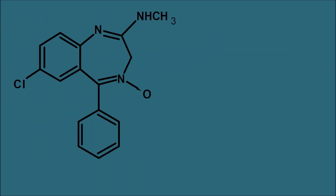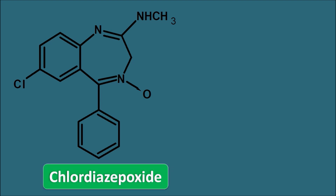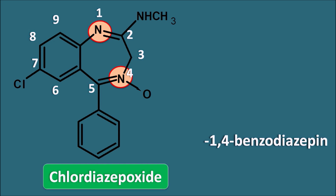Now let us take one structure — chlordiazepoxide, one of the first benzodiazepines to be developed. If we give the numbering, nitrogen is present at the first and fourth positions, so the root name is 1,4-benzodiazepine. But since an oxygen is attached as an oxide at the fourth position, we add the suffix '4-oxide'. So the root name with suffix becomes 1,4-benzodiazepine-4-oxide.